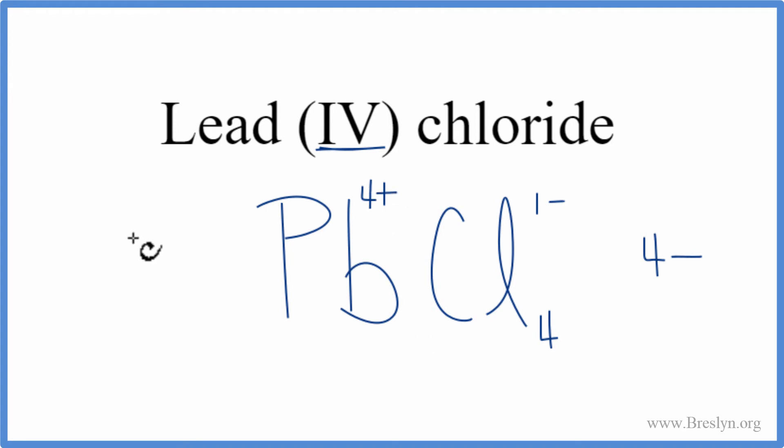1 lead times the 4 plus. So 4 plus, 4 minus, they add up to 0. The net charge is 0. This is the correct formula for lead (IV) chloride.